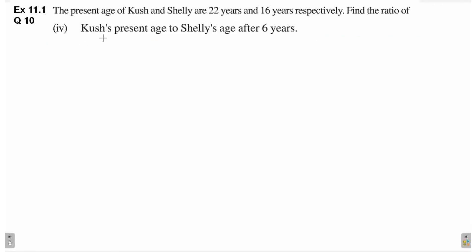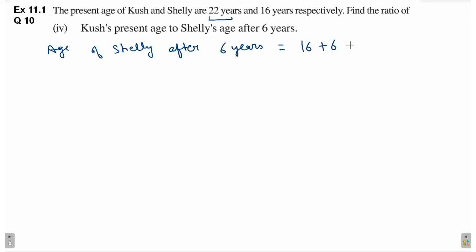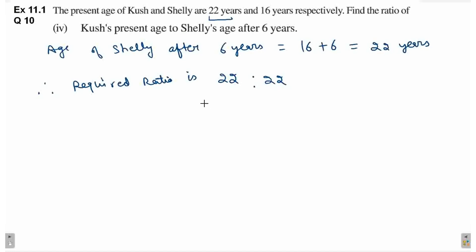Fourth part mein, find the ratio of Cush's present age to Shelley's age after 6 years. Ab Cush ki present age to pata hai, 22 years given hai. Age of Shelley after 6 years is equal to 16 plus 6. So, this is equal to 22 years. Therefore, required ratio is Cush ki present age which is 22, ratio Shelley ki age after 6 years which is 22. So, ratio is 22 by 22, this is 1 by 1. Therefore, ratio is 1 is to 1.